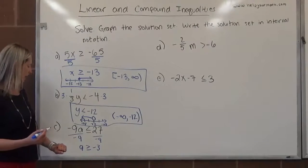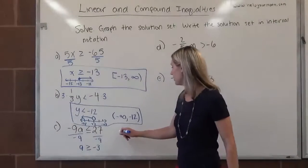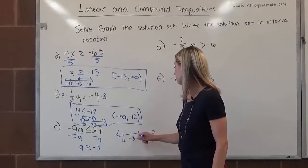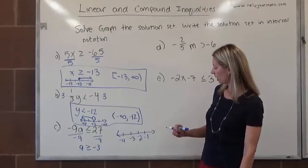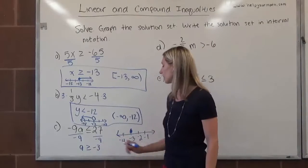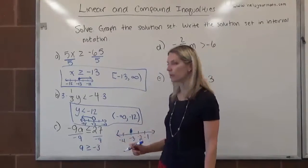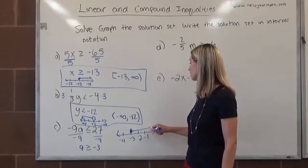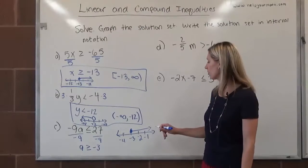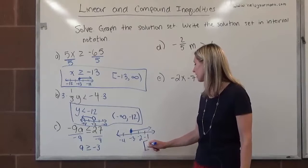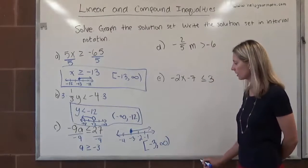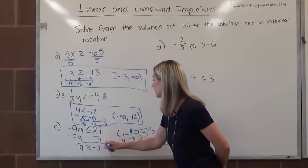On a number line: negative 4, negative 3, negative 2, negative 1. We put a closed circle over negative 3 to indicate that negative 3 is part of the solution set — the 'or equal to' is covered. Numbers bigger than negative 3 are to the right, so we draw an arrow to the right. In interval notation, we start at negative 3 and include it, so we use a bracket: negative 3. There is no biggest point, so we say it goes toward infinity. Those are the three representations for letter C.